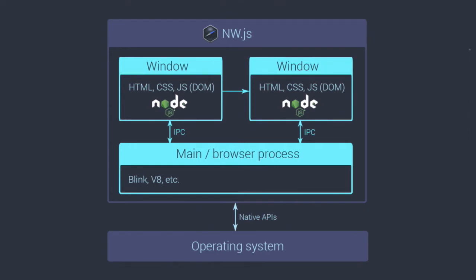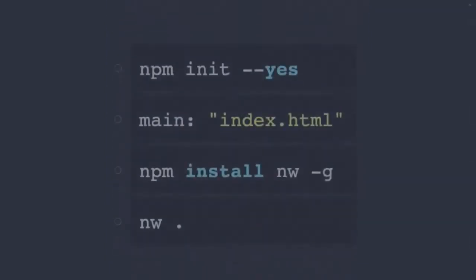There's a little arrow between the two windows because by default with NWS, your app starts with one window. From there, in your JavaScript, you can use built-in modules to open up other windows and do all sorts of stuff. It's really easy to create your first app.